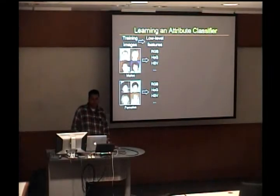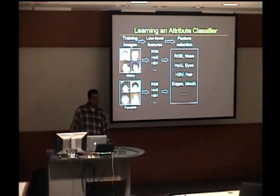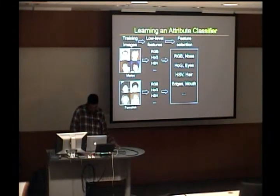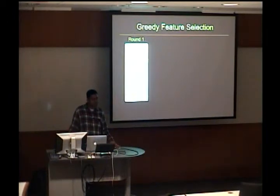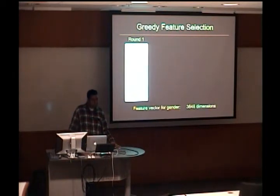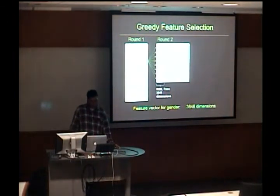For a particular attribute like gender, we want to identify the best features to use. We have a feature selection process which tries to find — not necessarily the optimal — but something tuned to gender. We use a greedy, iterative approach. In the first round, we train classifiers — in our case RBF SVMs — for each feature class using the images, find the one with the best cross-validation accuracy, and for gender we might end up picking RGB values on most of the face as the first feature.